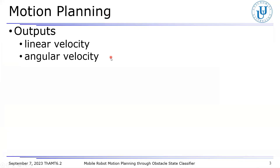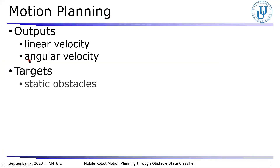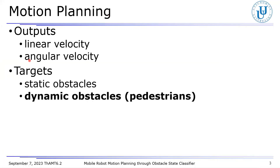First, let us define what motion planning is. Motion planning is to determine the following outputs for the sensor inputs: linear velocity and angular velocity. The robot plans avoidance motions not only for static obstacles, but also for dynamic obstacles such as pedestrians.